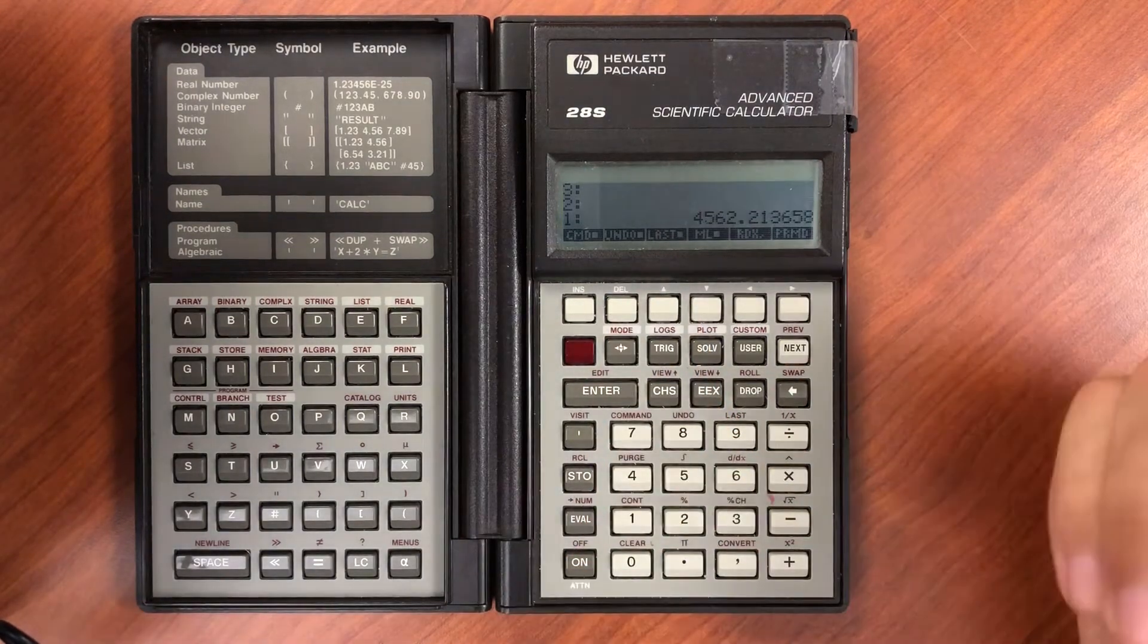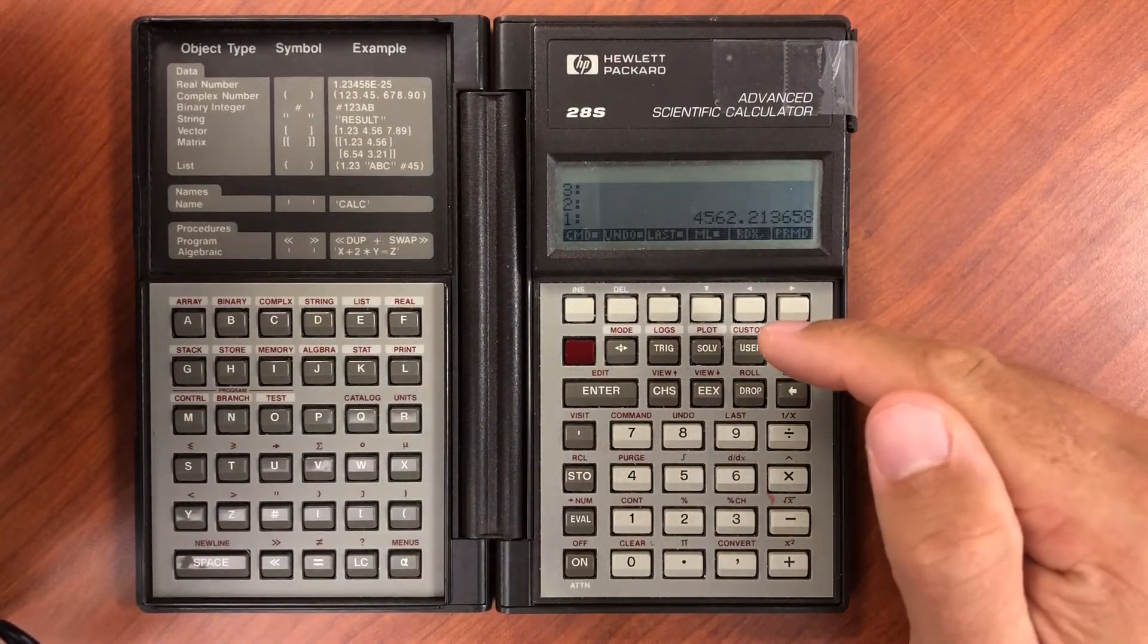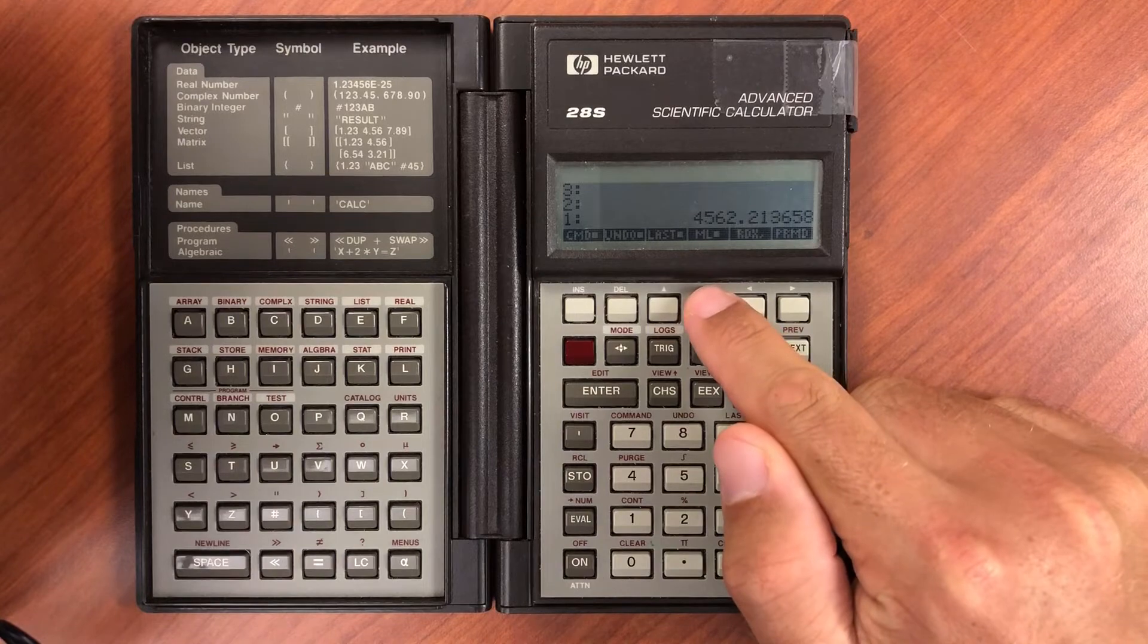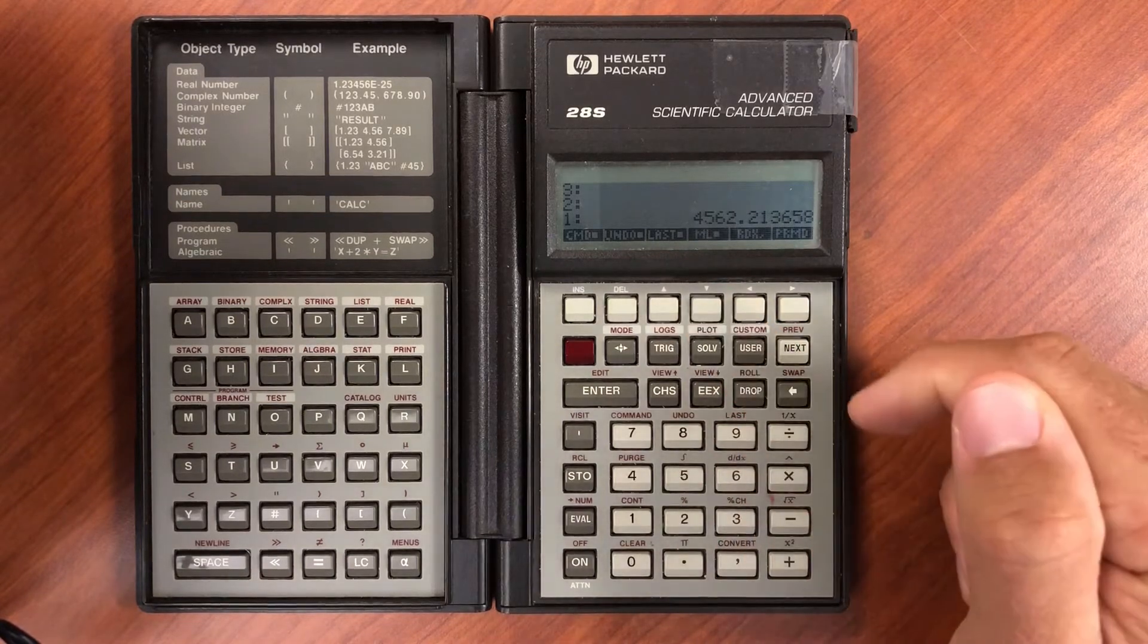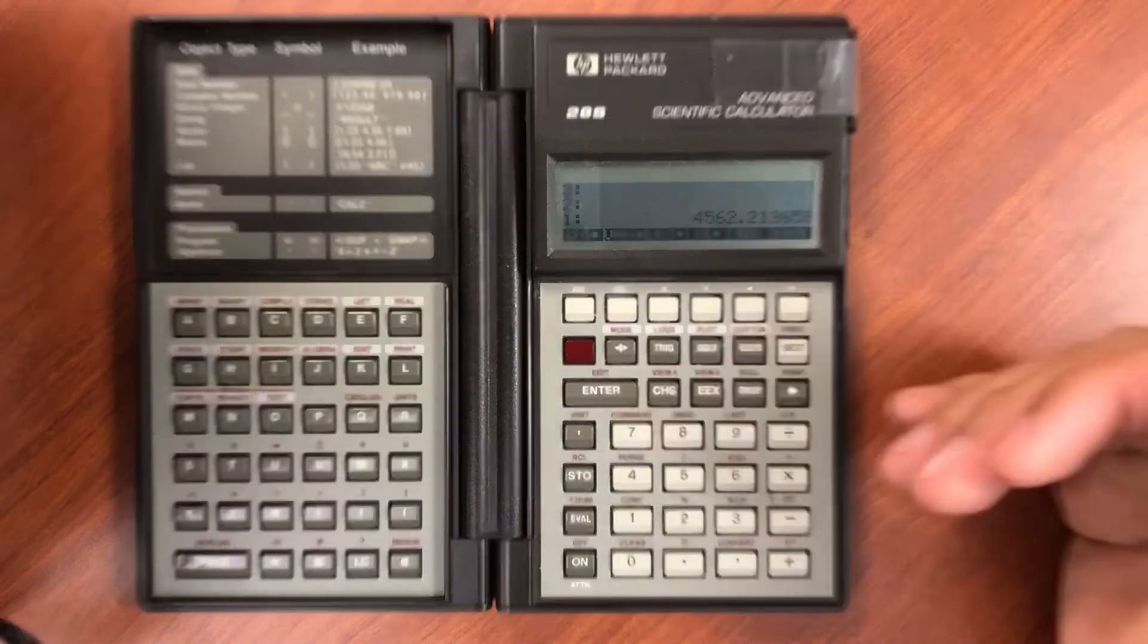Last stores the last number or the last value that was lost when you did your calculation. ML is multi-line, so you can turn off multi-line.